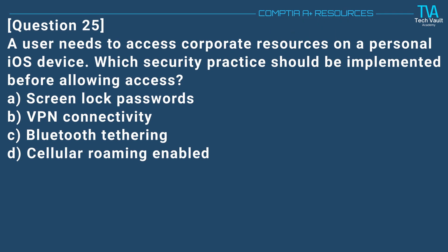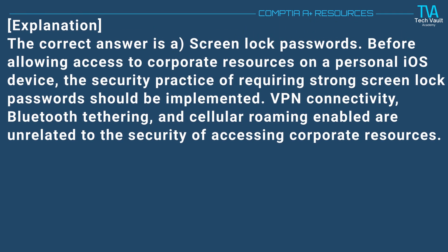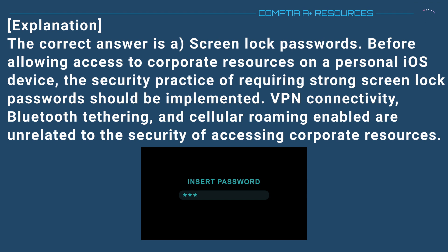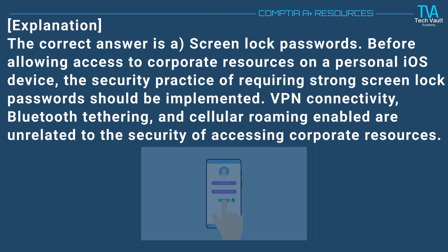Question 25. A user needs to access corporate resources on a personal iOS device. Which security practice should be implemented before allowing access? A. Screen lock passwords. B. VPN connectivity. C. Bluetooth tethering. D. Cellular roaming enabled. The correct answer is A. Screen lock passwords. Before allowing access to corporate resources on a personal iOS device, the security practice of requiring strong screen lock passwords should be implemented. VPN connectivity, Bluetooth tethering, and cellular roaming enabled are unrelated to the security of accessing corporate resources.